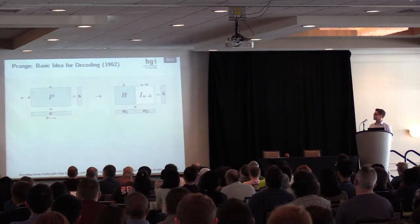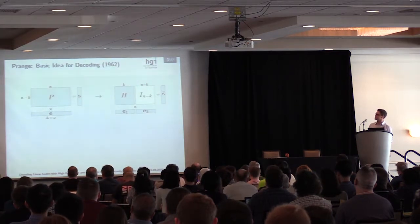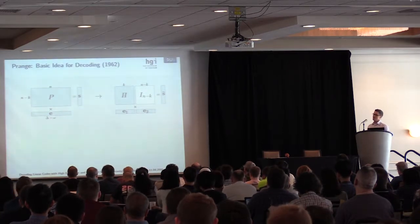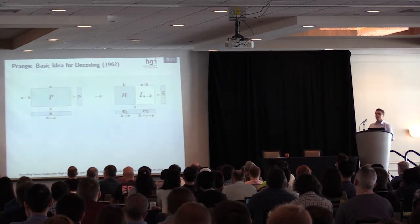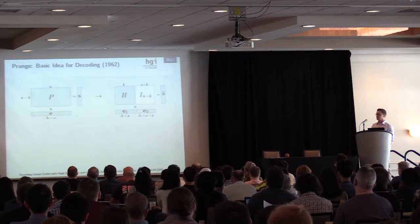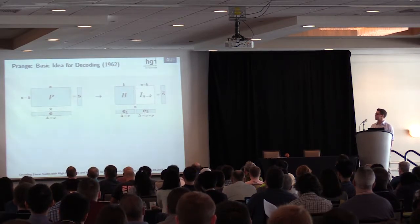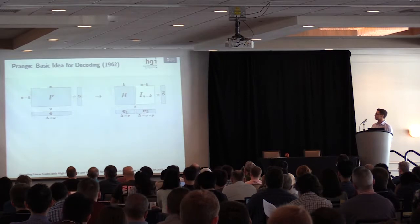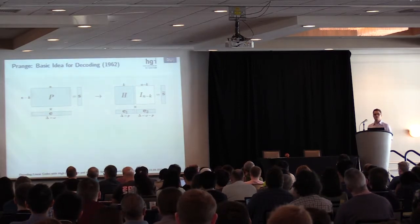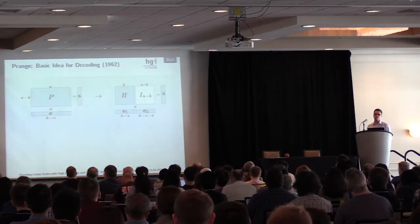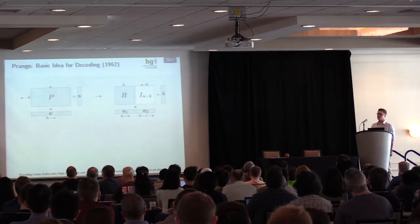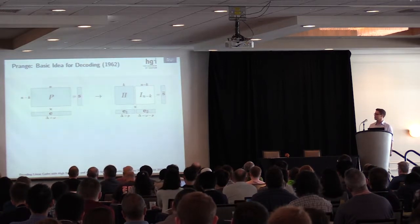We can also split the error vector e into two parts, e1 of length k and e2 of length n minus k. The second thing he did was to enforce the weight distribution on this error vector, namely e1 has weight p, which has to be optimized, and e2 has weight omega minus p. This can be done via column permutation. The problem is we don't know e, so we don't know which permutation to choose. But we can say that with some certain probability we can achieve this.